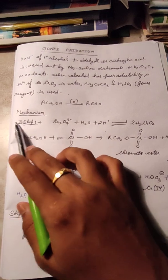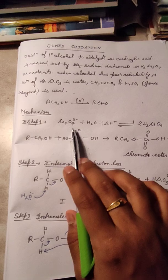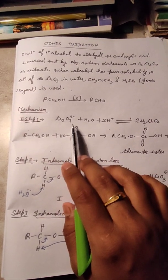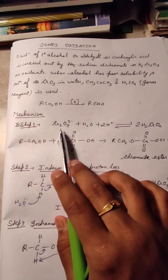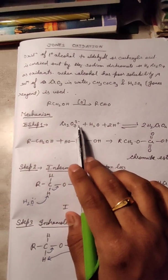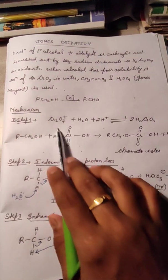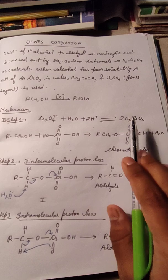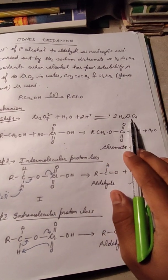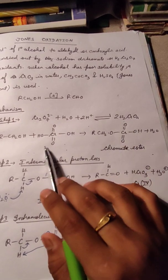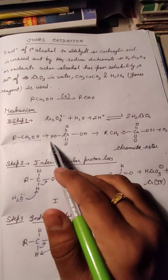Now let's move to the mechanism. Step one: the chromic oxide ion Cr₂O₇²⁻ reacts with H₂O and 2H⁺ in a reversible reaction to form H₂CrO₄, which is hydrogen chromate.